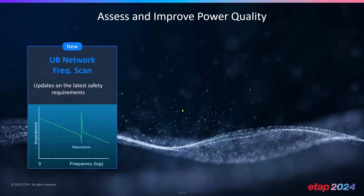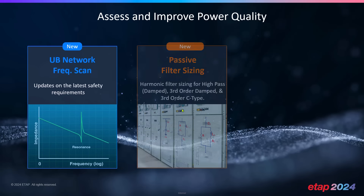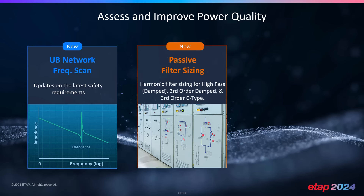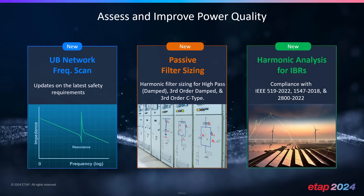You can also use ETAP to assess and improve power quality. We've enhanced our unbalanced harmonic analysis module to include unbalanced network frequency scan, which allows scanning the frequency and plotting impedance versus frequency for each phase individually — particularly useful for single-phase systems. We've also enhanced passive filter sizing by expanding our offering beyond a single tuned filter to include sizing for high-pass third-order damped as well as C-type filters.